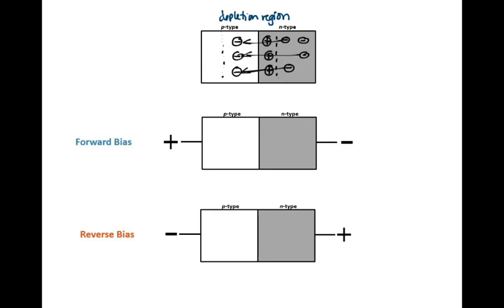If we attach our P-N junction to a power source like a battery, indicated by the plus and minus, we can apply forward bias to force electrons to move through our conductor. In this case, the positive terminal attached to the P-side acts like a source of holes.